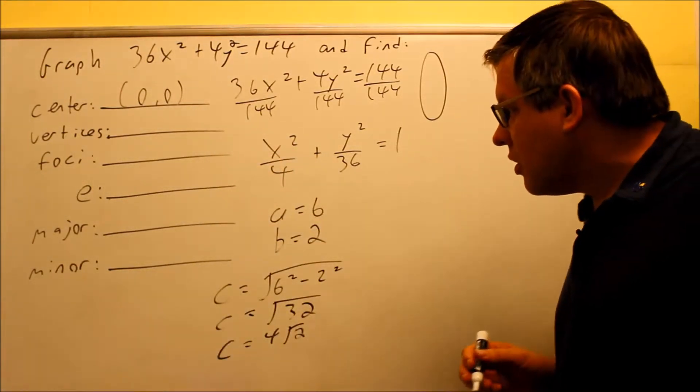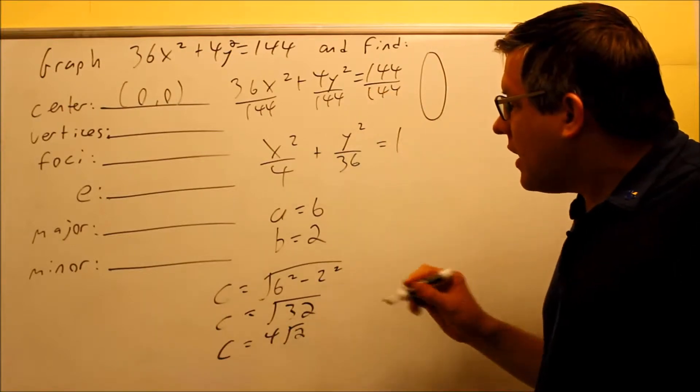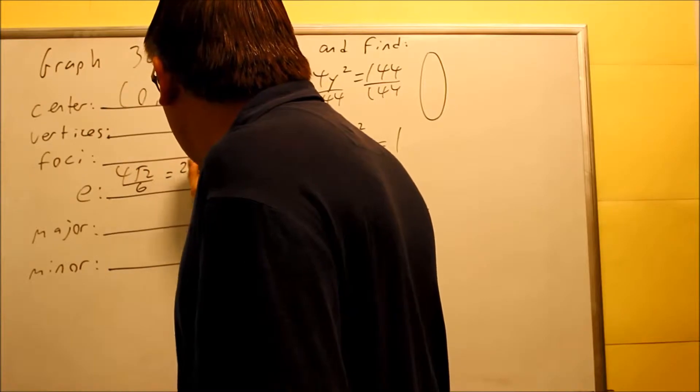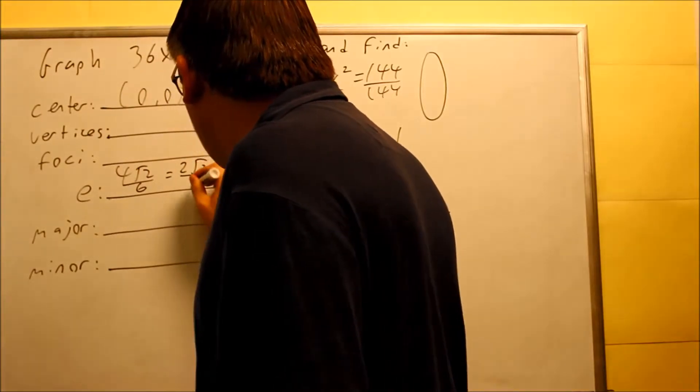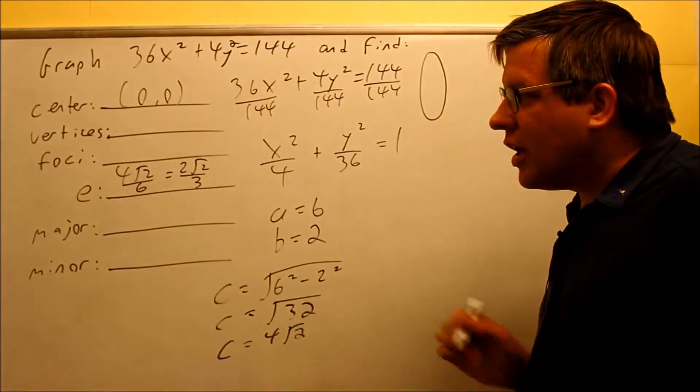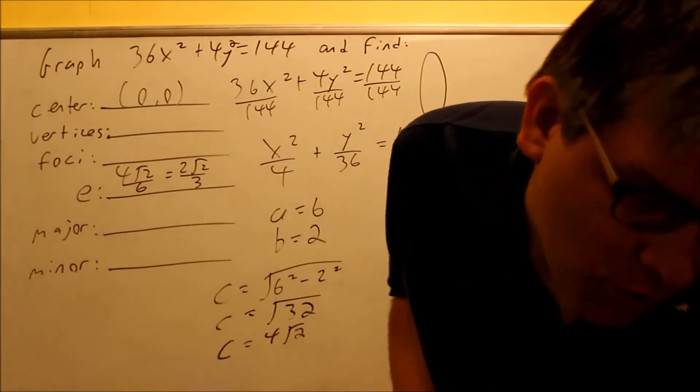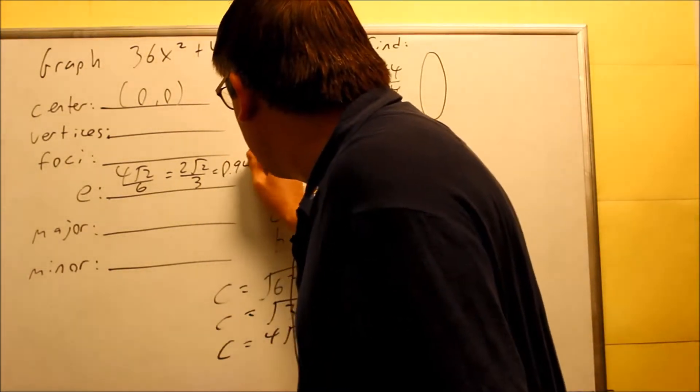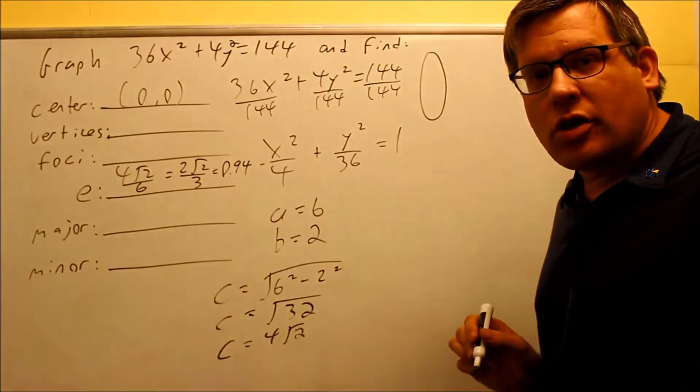Now your eccentricity is your c over the a, so we're going to do 4√2 over 6, which is 2√2 over 3 if we reduce that. And just for decimal purposes, that's going to be equal to 0.94. So 0.94 is your eccentricity.